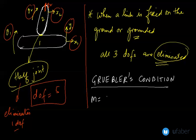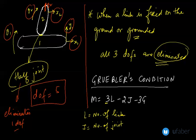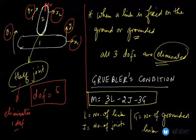As per the formula M is equal to three times L minus two times J minus three times G in which L is the number of links. All links have three degree of freedom. J is the number of joints, and G is the number of grounded links or fixed links. So this is a very important equation in finding out the degree of freedom of plane mechanisms.